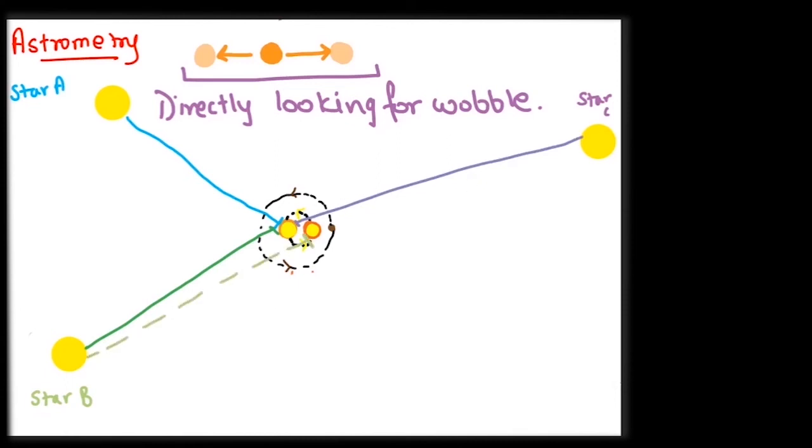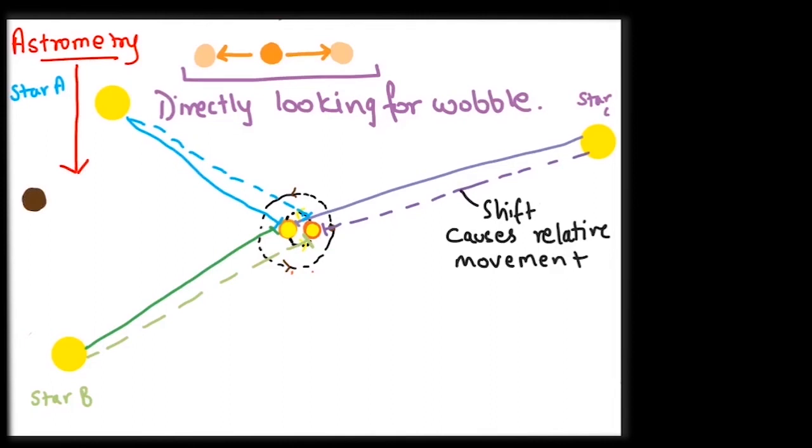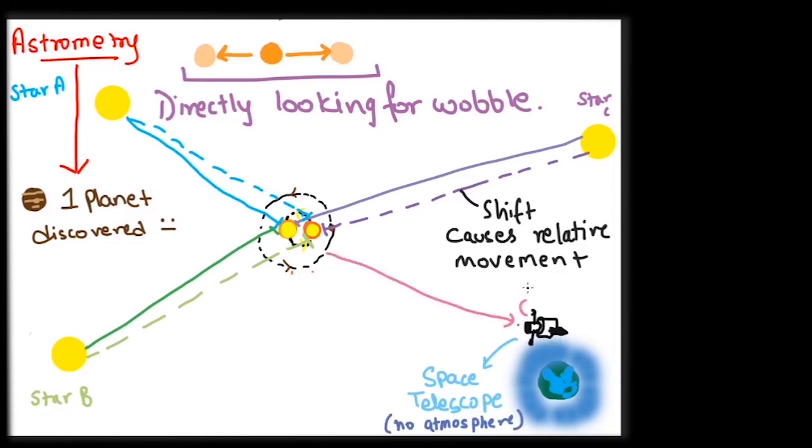This motion is detected by observing any change in the relative position of the suspect star with respect to three surrounding stars. Very sensitive instruments are required for this job. The focusing problem caused by the atmospheric disturbances add to this problem of observing this minute motion. It is because of these restrictions that only one planet has been detected using astrometry till date. We can hope for the situation to improve with the advancement in technology and using space telescopes.